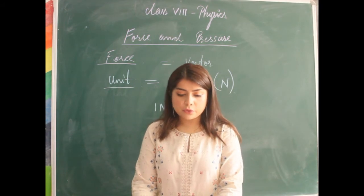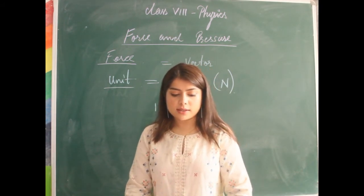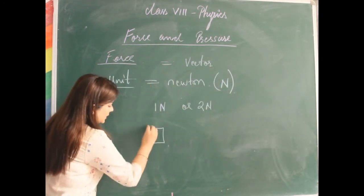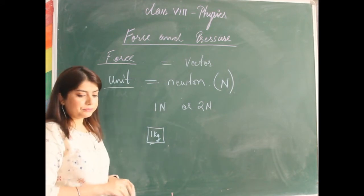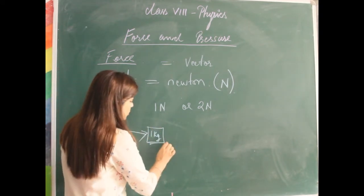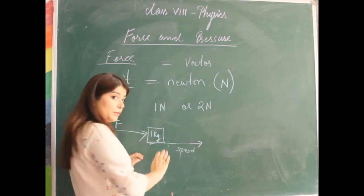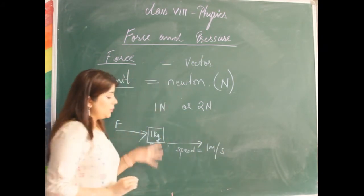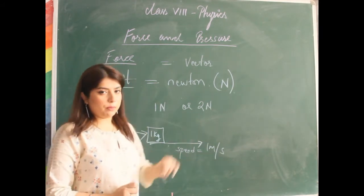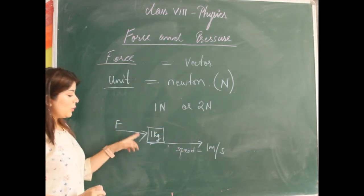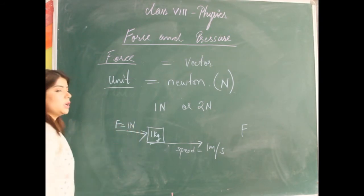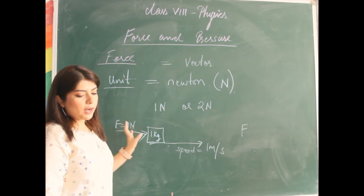One Newton is defined as the force which, when applied on a moving body of mass 1 kg in the direction of its motion, increases its speed by 1 meter per second in one second. So if we have an object of 1 kg and we apply some force and it moves with a speed of 1 meter per second, then the force applied is said to be 1 Newton. This is how you define 1 Newton of force.